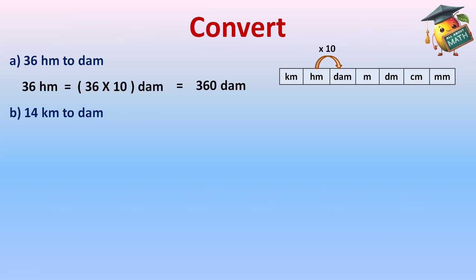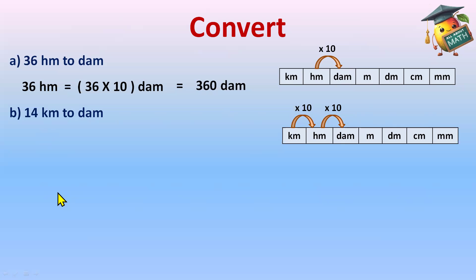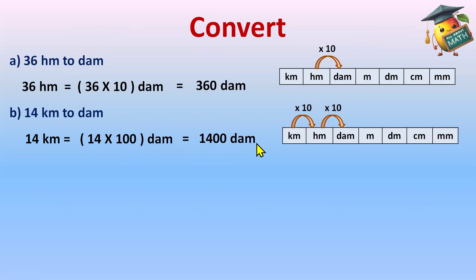14 kilometer to decameter. Let's make the chart again using King Henry died, mother didn't cry much. Kilometer to decameter — we take the first jump to hectometer, then next to decameter, so there are two jumps. We are moving forward, so we'll multiply by 10 each step, giving us 10 × 10 = 100. So, 14 kilometers equals 14 × 100 = 1400 decameter.